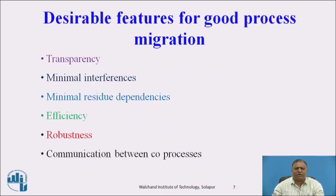Desirable features of a good process migration system. The following are the features: transparency, minimal interference, minimal residue dependencies, efficiency, robustness, and communication between co-processes. We are going to see each and every feature one by one.